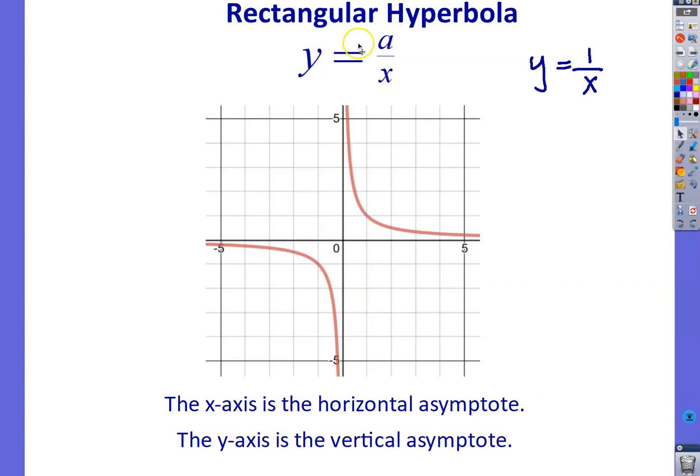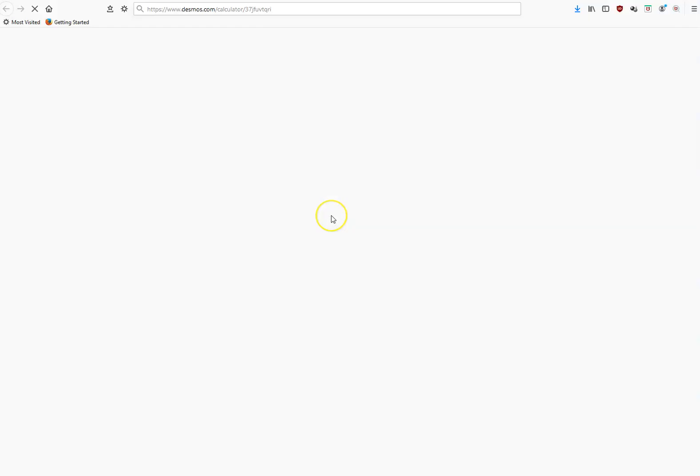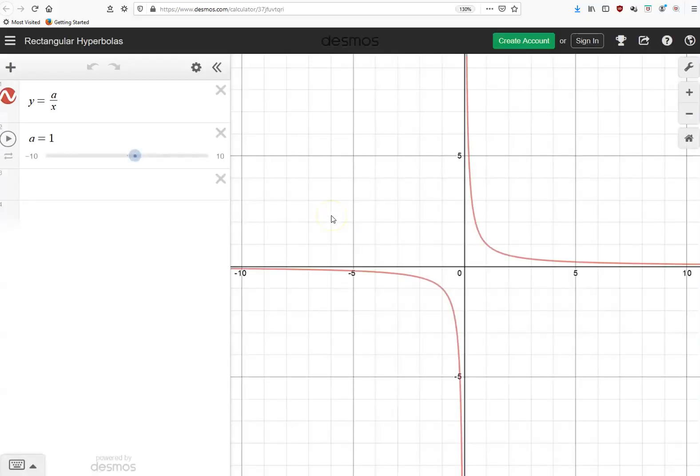Okay, let's see what happens to the graph as we change the value of a. And for that, we're going to use Desmos. Okay, so here we are in Desmos. So there's the equation, y equals a on x, where a is equal to 1. So that's the equation of the graph that we had before.